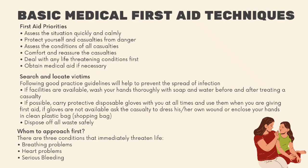Who to approach first? There are three conditions that immediately threaten life: breathing problems, heart problems, and serious bleeding. When there is more than one injured person, go to the quiet one first — they may be unconscious and need attention. For an unconscious person, open the airway by placing one hand on the forehead and gently tilting the head back and lifting the chin. For checking breathing: look, listen, and feel for breathing for no more than 10 seconds. Look for chest movement, listen for sounds, and feel for breath on your cheek.